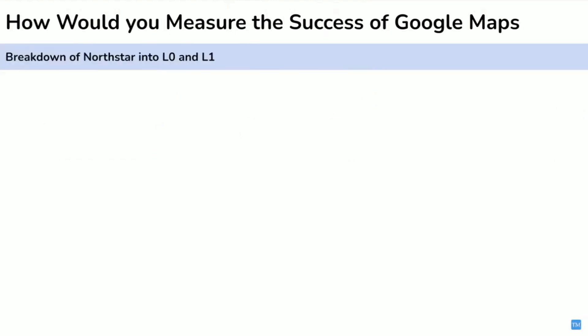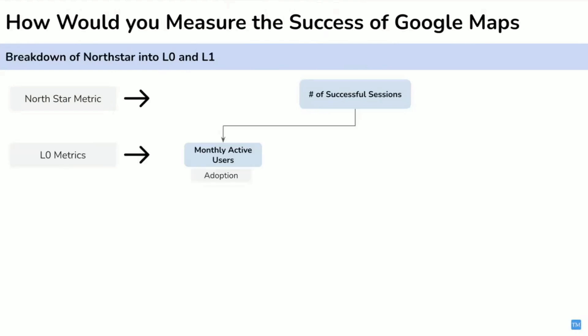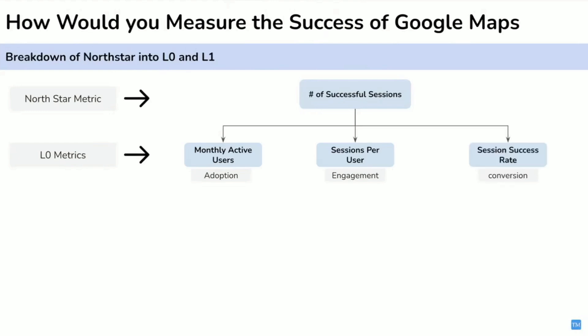Our North Star metric is the number of successful sessions per month — monthly successful sessions. Breaking it down at the L0 level: it equals monthly active users × sessions per user × session success rate. Session success rate is the percentage of sessions having successful exploration or successful navigation. The first term represents acquisition, the second represents engagement depth, and the final one represents conversion — that is, quality of the session.